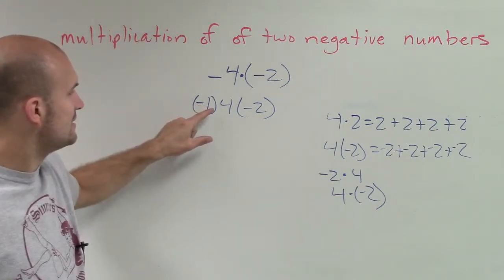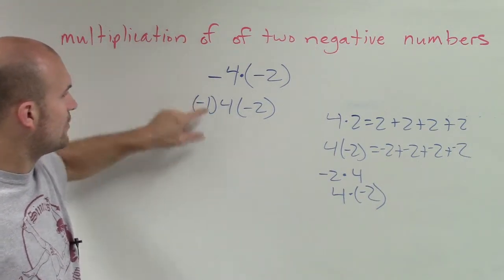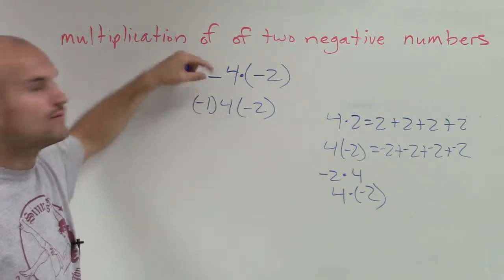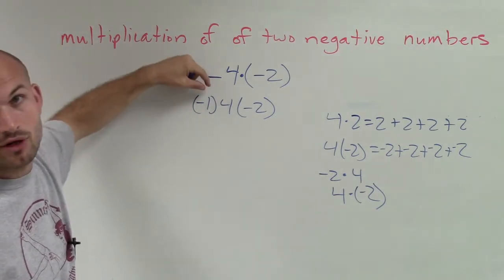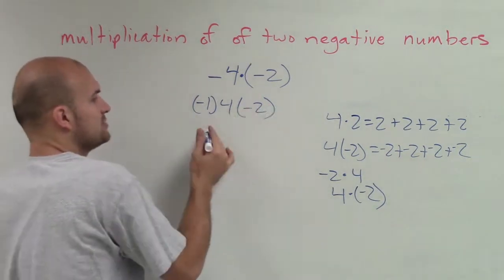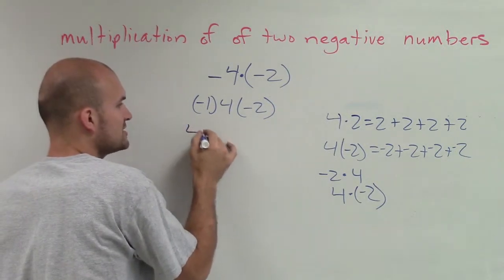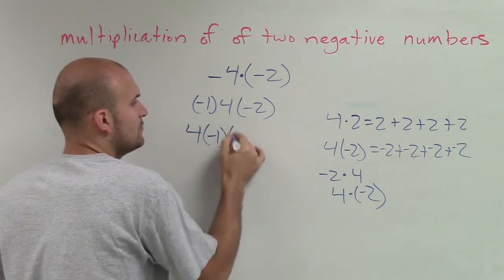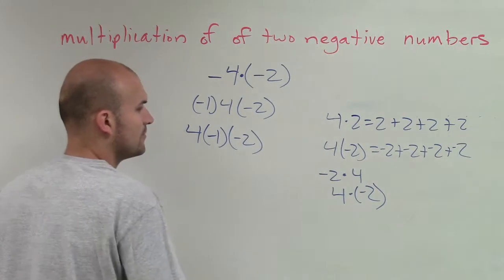I can pull out that negative 1 by using that multiplication property. Now I'm going to use the commutative property of multiplication to say 4 times negative 1 times negative 2.